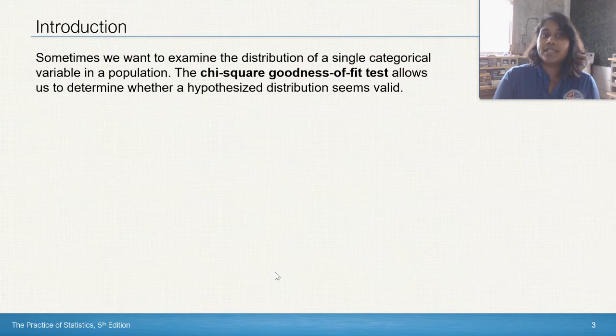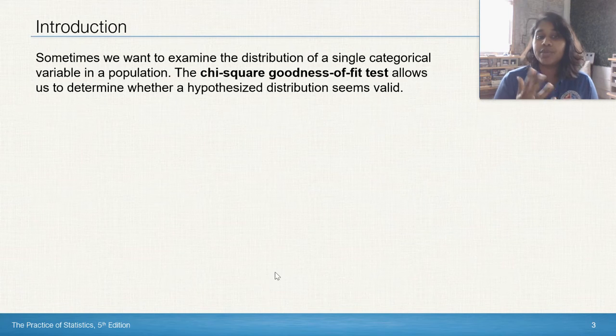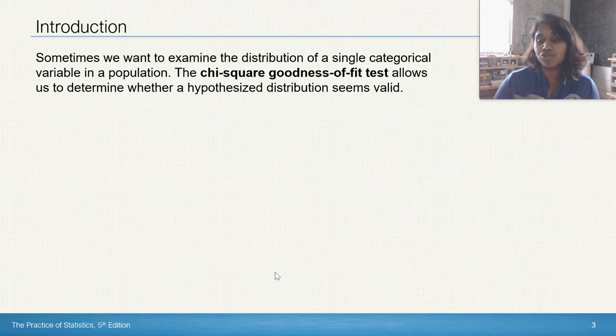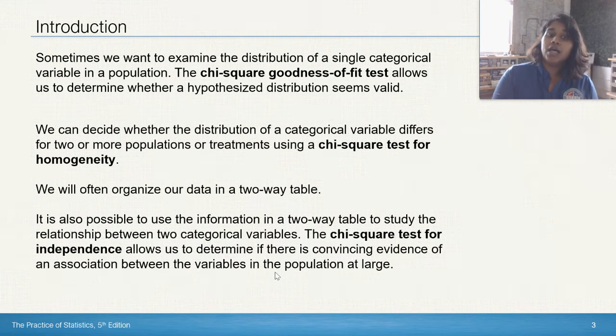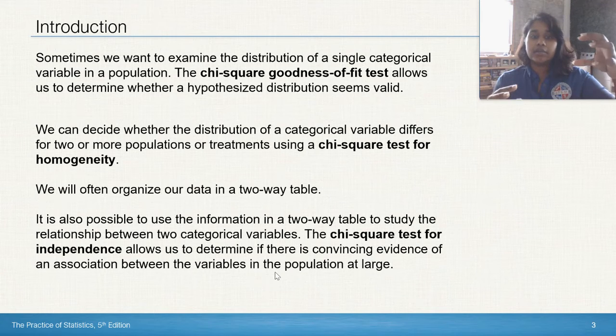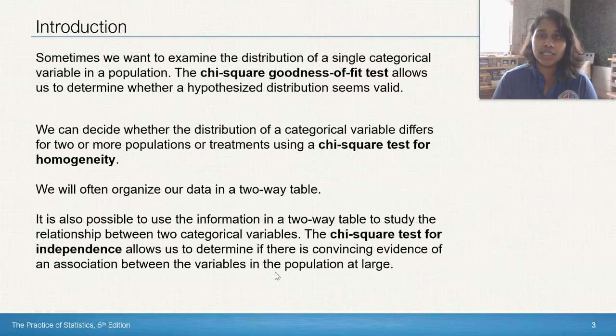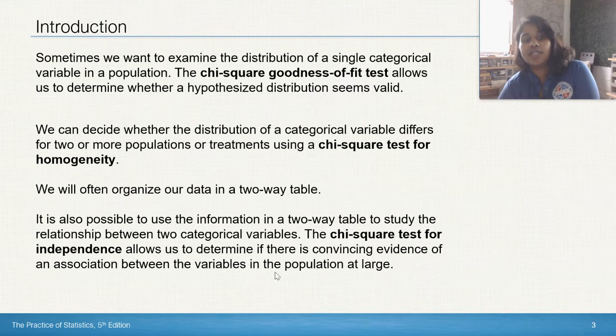Sometimes we want to examine the distribution of a single categorical variable in a population. So we can use the chi-square goodness of fit test to determine whether a hypothesized distribution seems valid. There's two different tests that we've got here. One's called the chi-square test for homogeneity, and the other is going to be the chi-square test for independence.